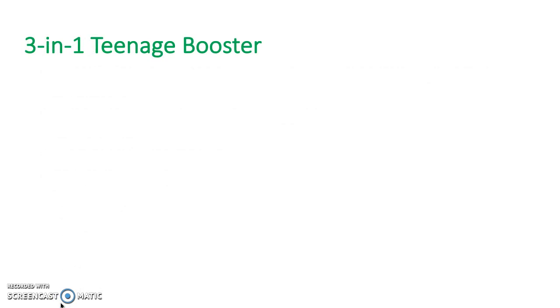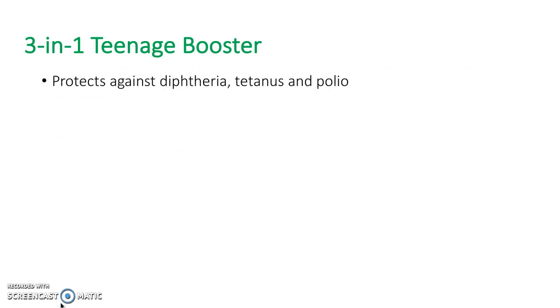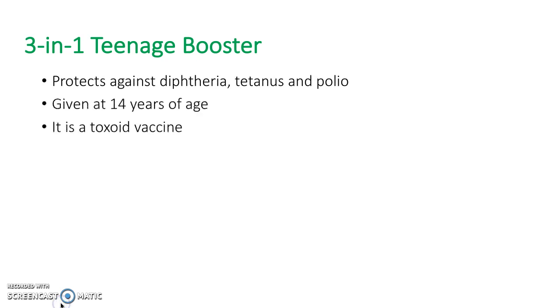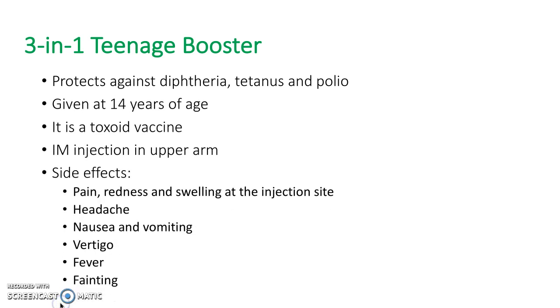The 3-in-1 teenage booster follows on from the 4-in-1 preschool booster. This vaccine covers diphtheria, tetanus and polio, and is given to children when they are 14 years old as an intramuscular injection into the deltoid muscle.